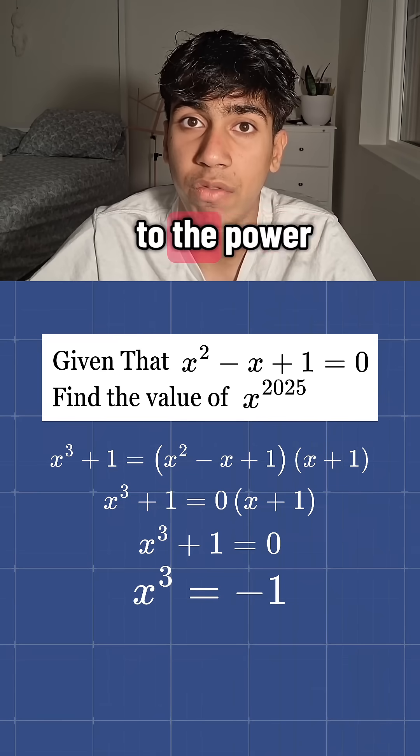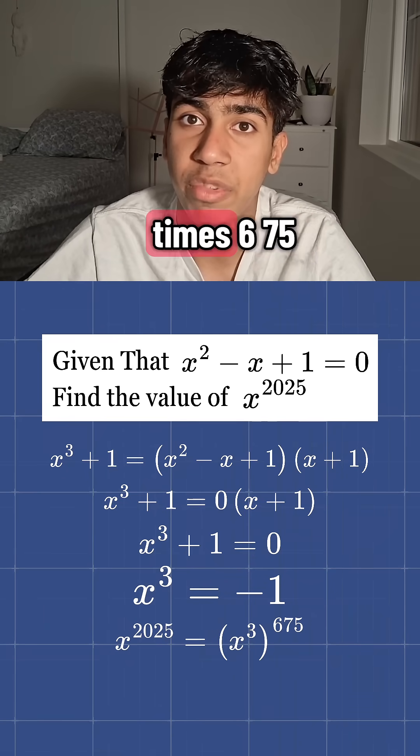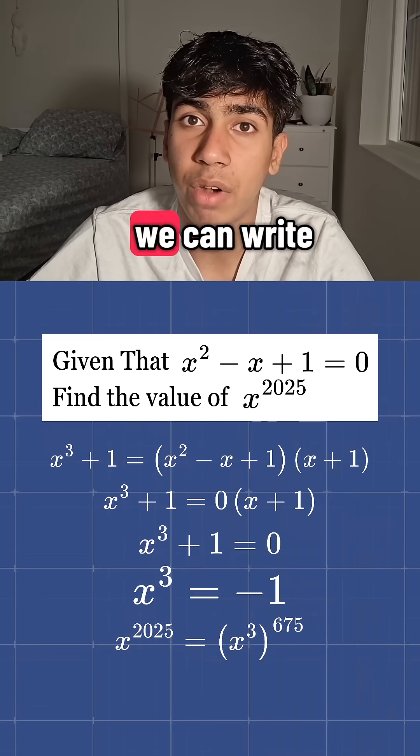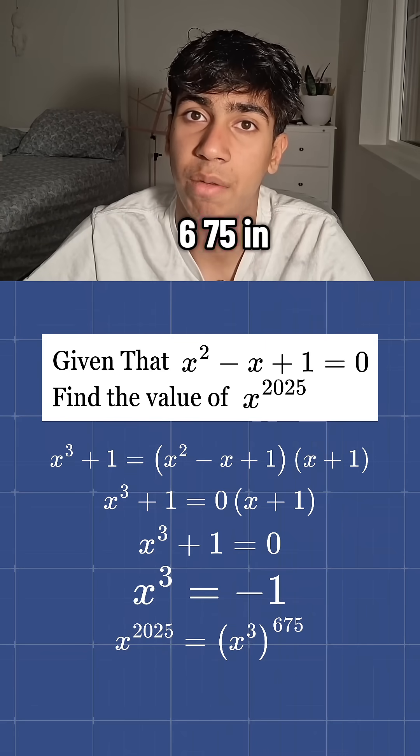Now let's connect that to x to the power of 2025. We can write 2025 as 3 times 675, which means that we can write x to the power of 2025 as x to the power of 3 times 675 in the exponent.